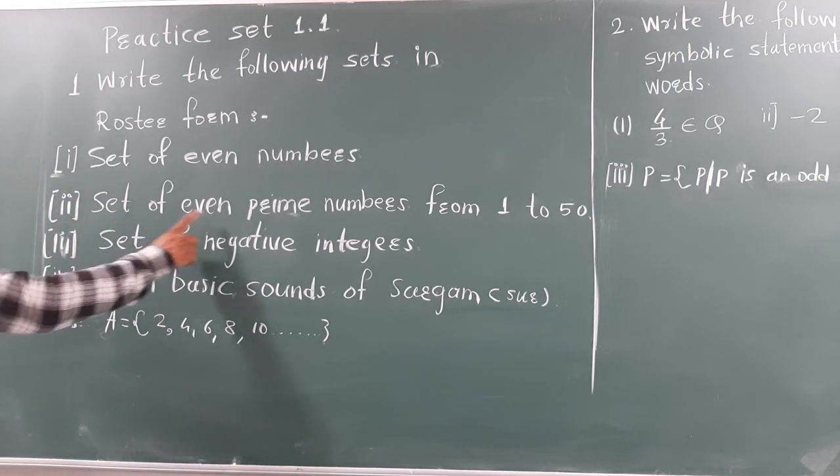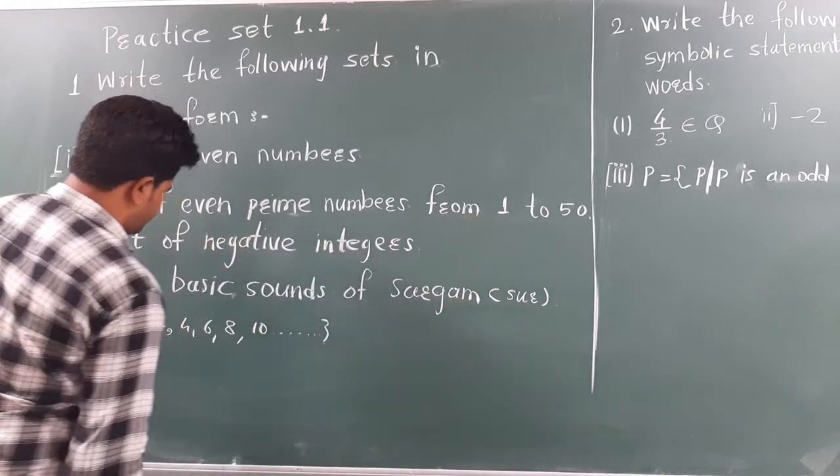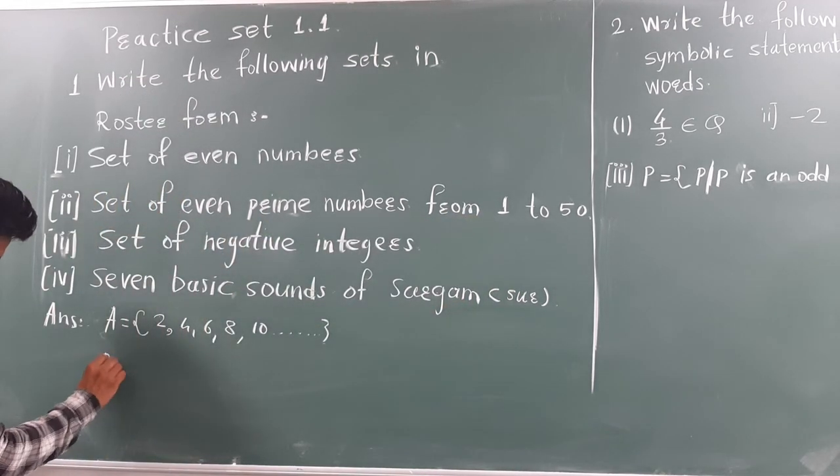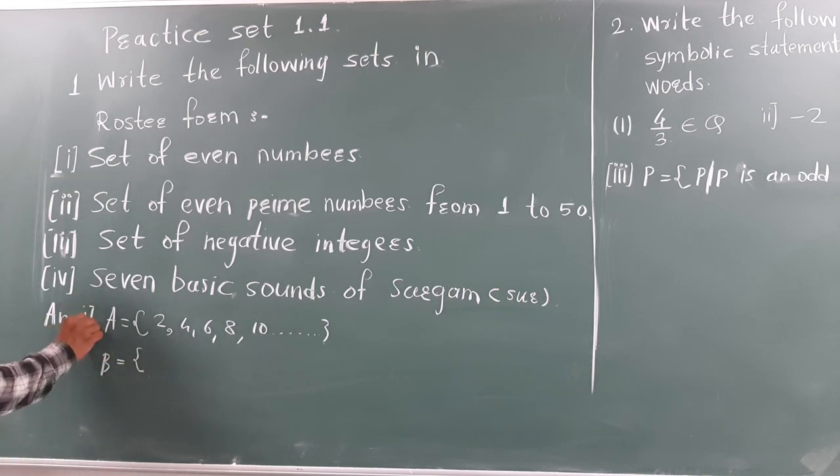Second, set of even prime number from 1 to 50. We can take on this as a set B. Second one. This is first, this is second.